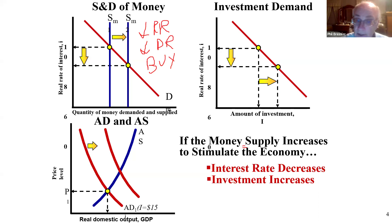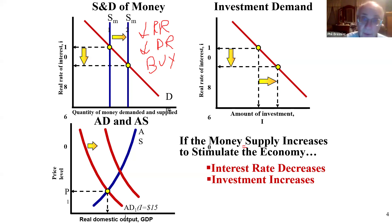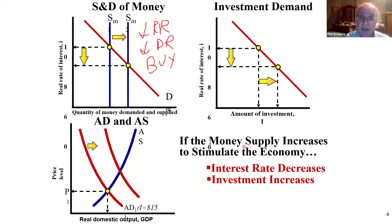If investment increases, I know I'm going to shift aggregate demand to the right. Consumption also is going to increase. AD goes to the right. When AD goes to the right, price levels go up. If price levels go up, I need more money in my pocket — the demand for money would increase. So to shift AD right in a limited reserve: reserve requirement down, discount rate down, buy bonds — that shifts money supply right, lowering interest rates, investment increases, AD right.